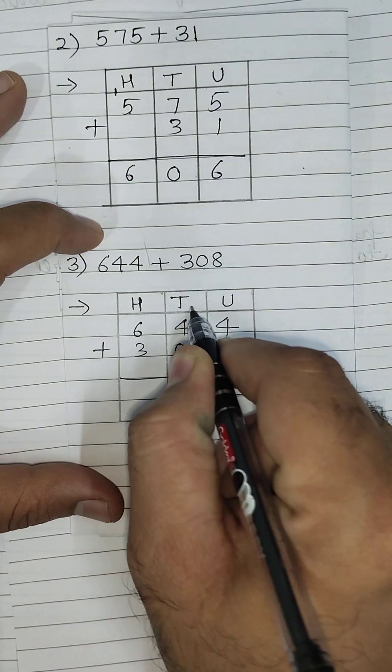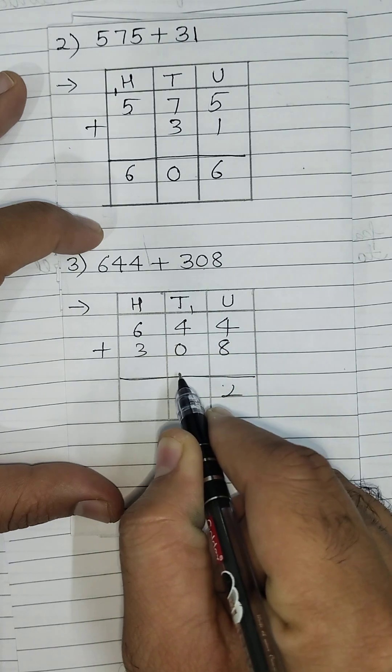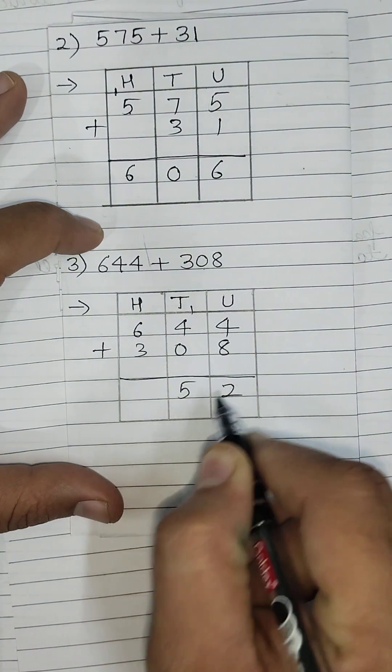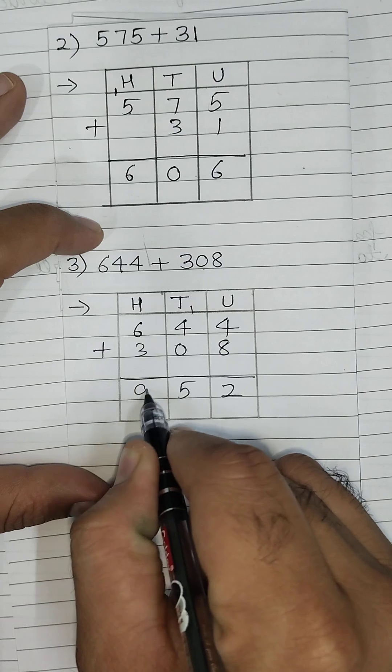2, 1 will be carry over. 4 plus 1 is 5. 5 plus 0, this will be 5. Next, 6 plus 3, this will be 9.